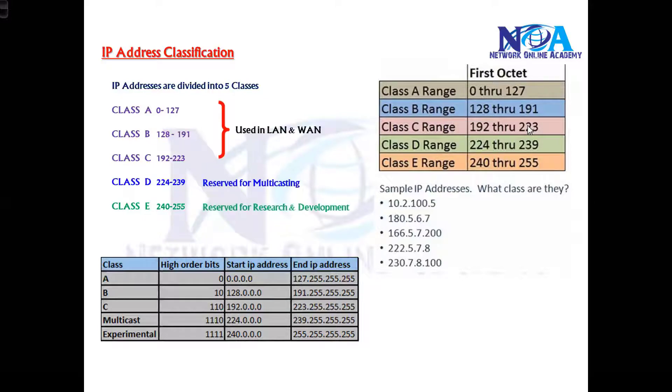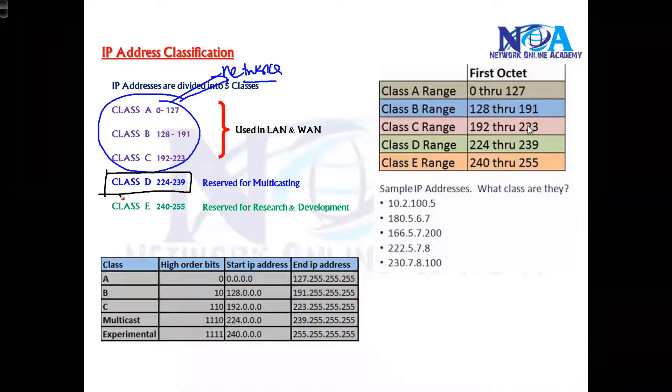And once we understand that, the next thing is we need to know what the classes are used for. Like in normal LAN and WAN scenarios in our networks, whether it is in a LAN or WAN, we will be using only ABC classes. So we can use only ABC classes, not the other classes, because the Class D is reserved for multicasting. Whereas we cannot use this address to any device in the network, multicast traffic for hosting some multicast.